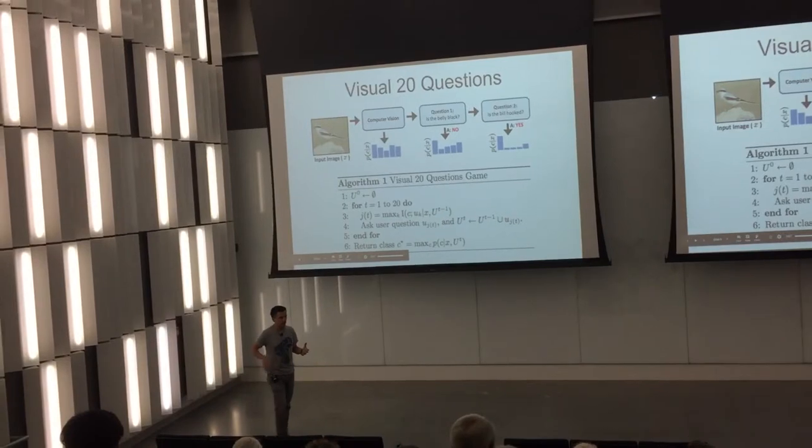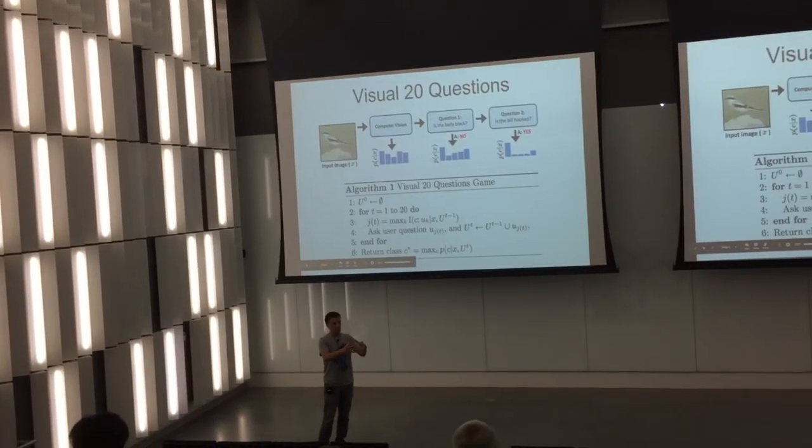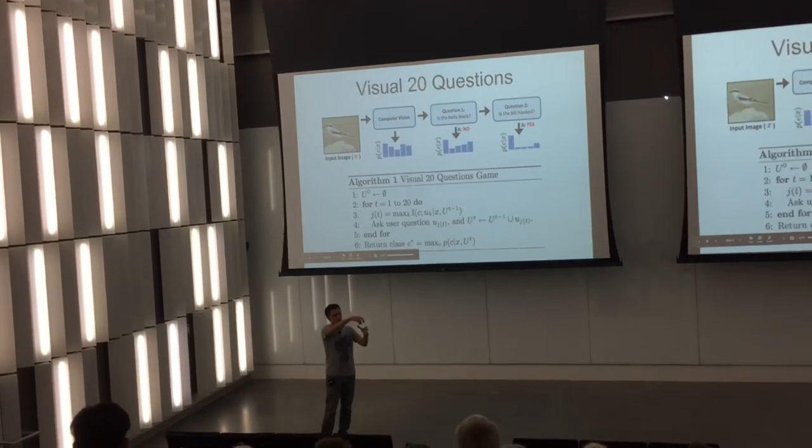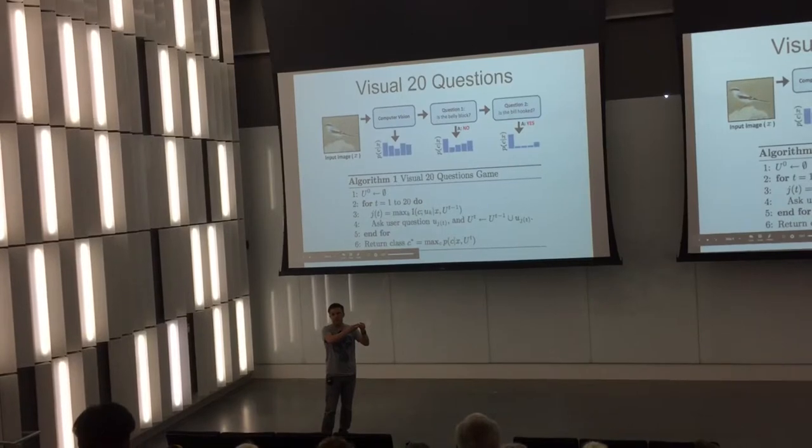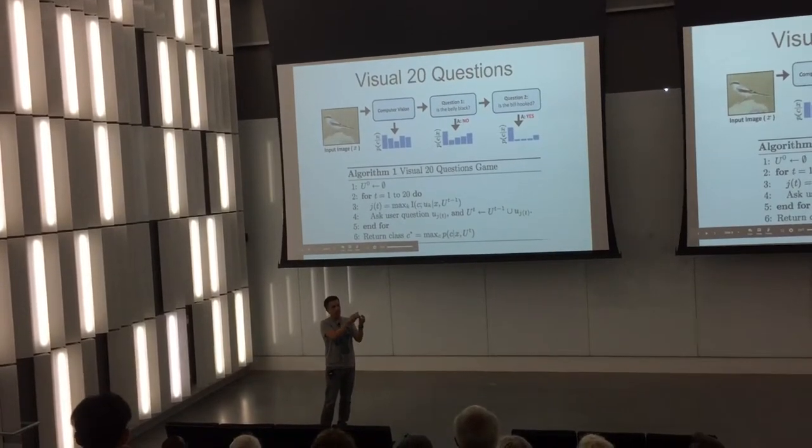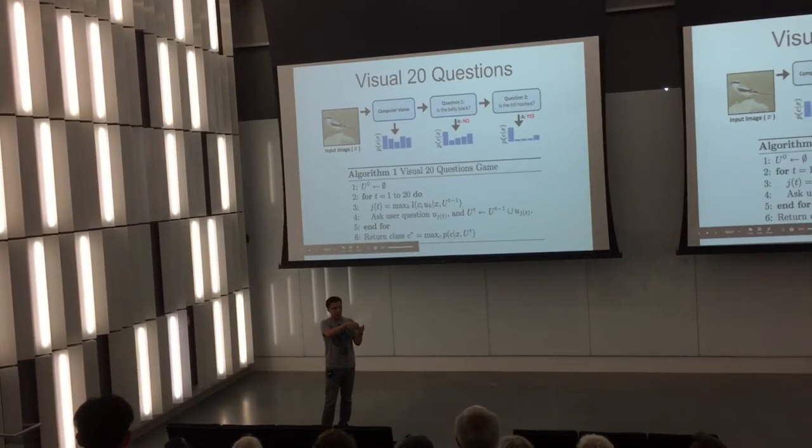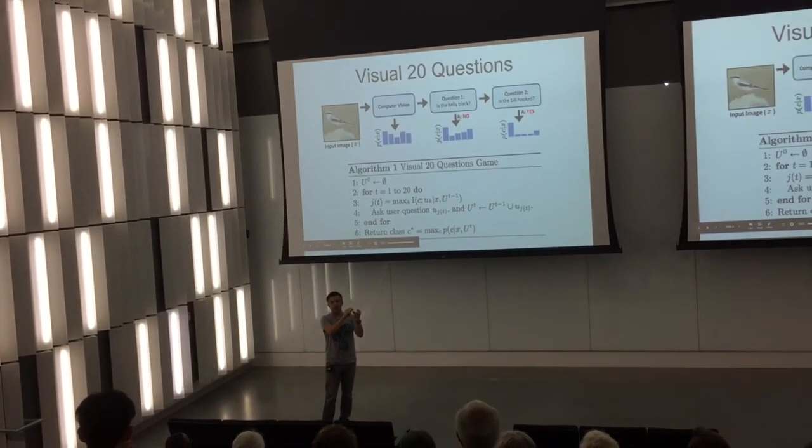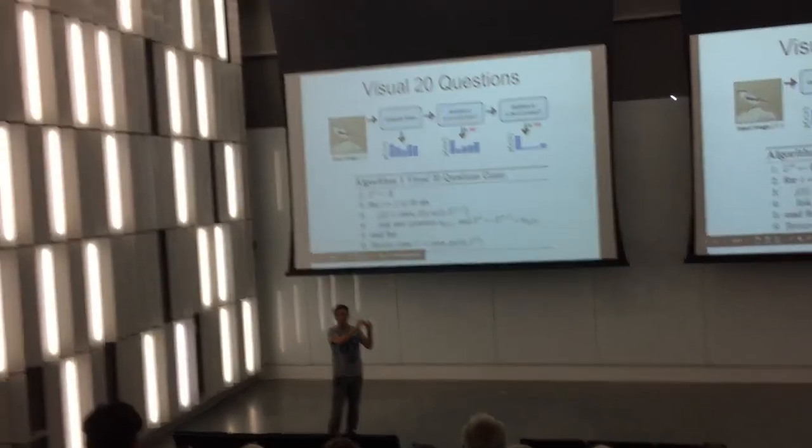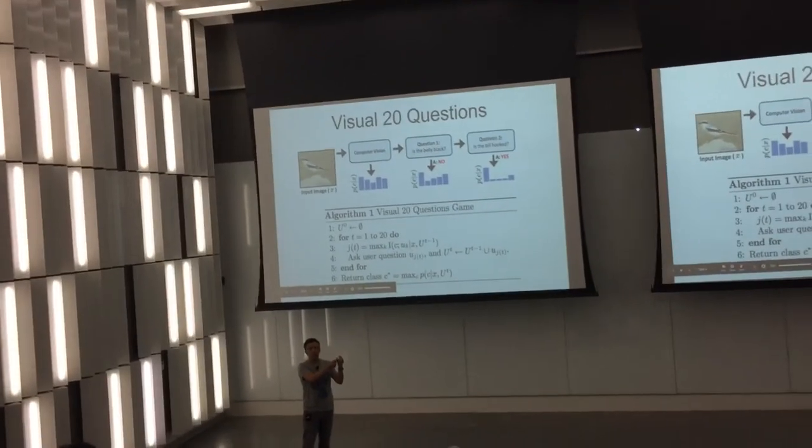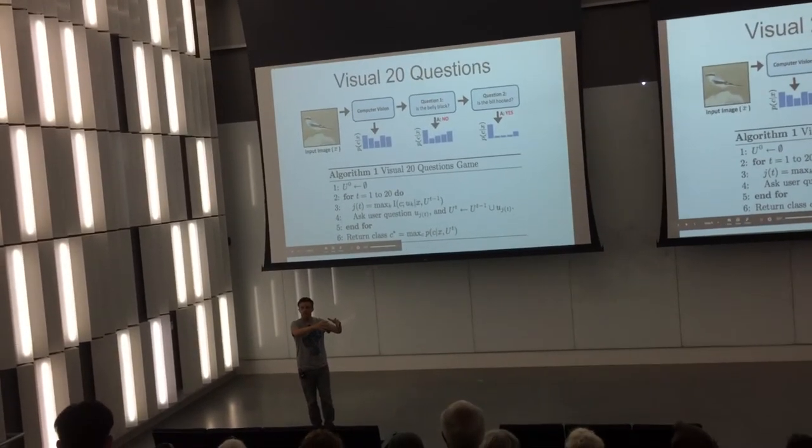So I mentioned that what's happening is that you're selecting questions that maximize expected information gain. So that term is something that comes from information theory, but here's a way to think about it. Let's say you have an urn and you have, you fill it with ping pong balls and each ping pong ball has a question written on it. And the question might be, is the bill black? And another ball in the urn says, are the feet white? And another one says, are the wing tips red?